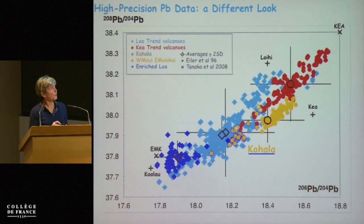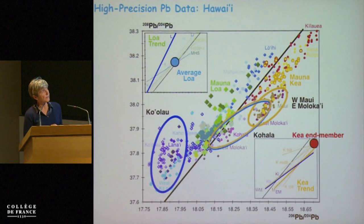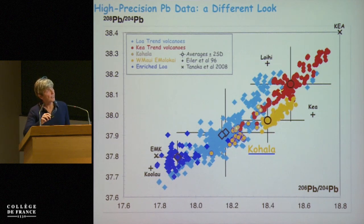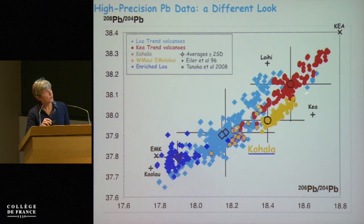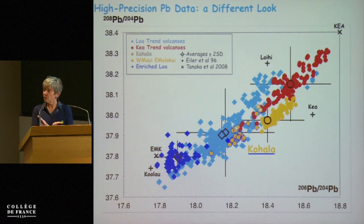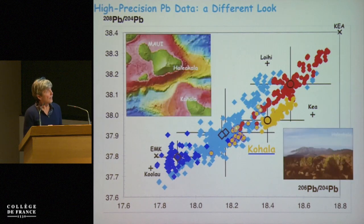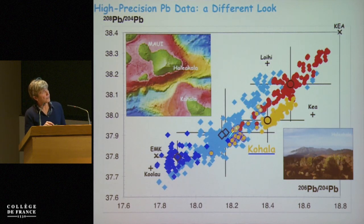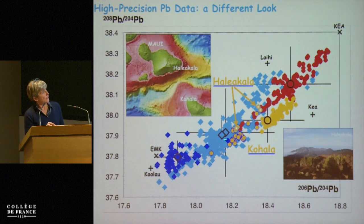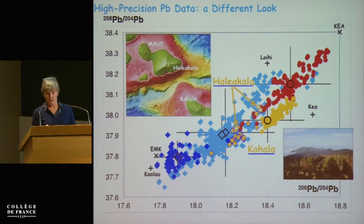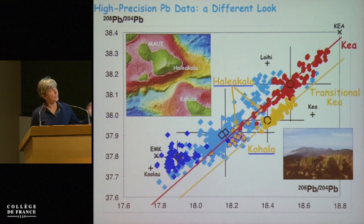This is the same data pool as the previous diagram, exactly the same, except I've color-coded them differently. We have Kea in red, Loa in light blue, Rich Loa in dark blue, and West Maui and East Maui in orange. Statistically, they are different — I ran all kinds of discriminant analyses and they do not intersect. When we look at Kohala — which is here — West Maui is here, East Molokai is there. Haleakala, which is between Maui and Kohala, plots there, and statistically they belong to Kohala, not to Kea. The lines here are completely different — what does that mean in terms of the structure of the plume?